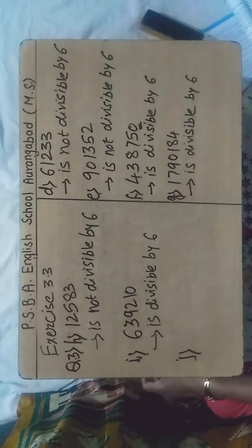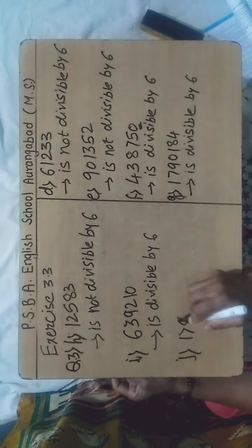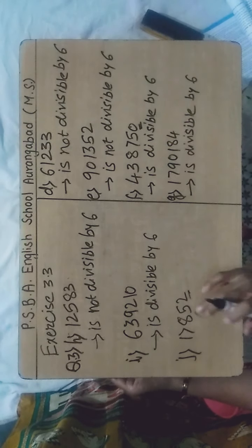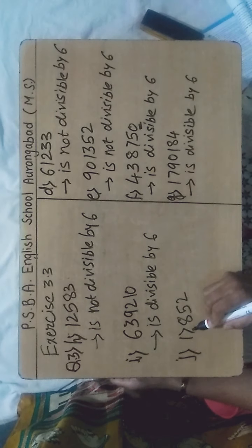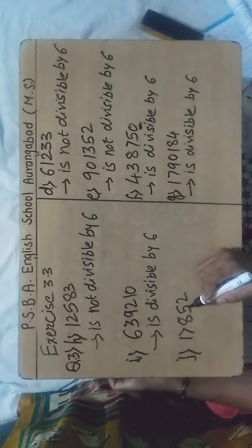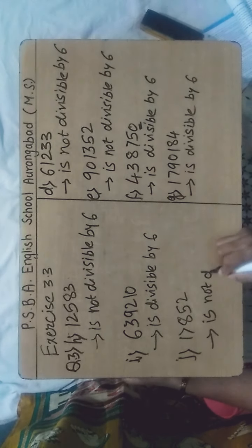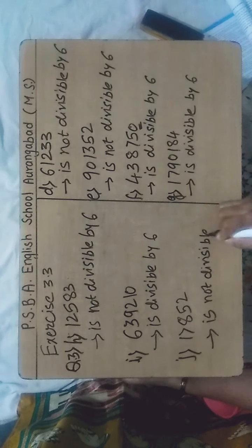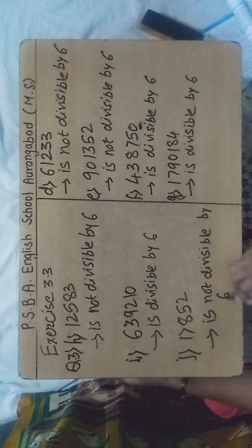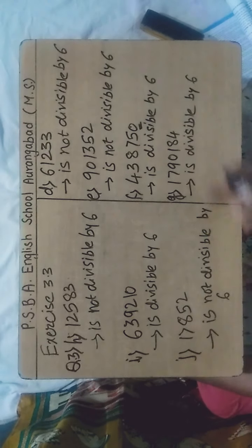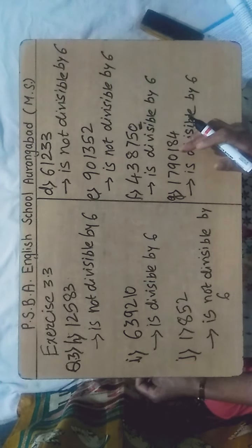The last sub-question J: the number given to us is 17,852. This is divisible by 2 because it is having 2 at its ones place. The sum of digits: 1+7+8+5+2 = 23, which is not divisible by 3. Therefore the above number is not divisible by 6. So here we have finished question number 3, exercise 3.3. We will start question number 4 in the next video.